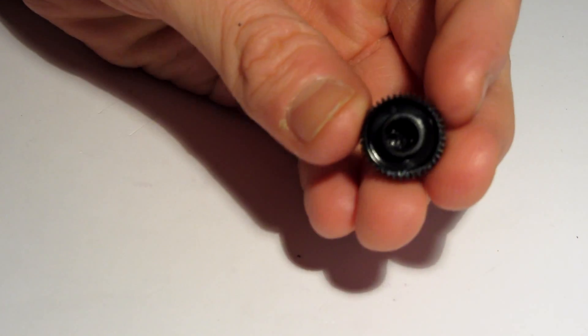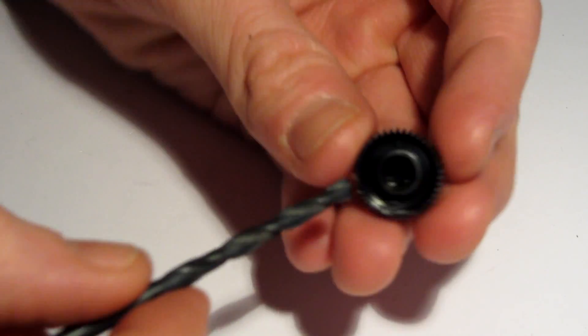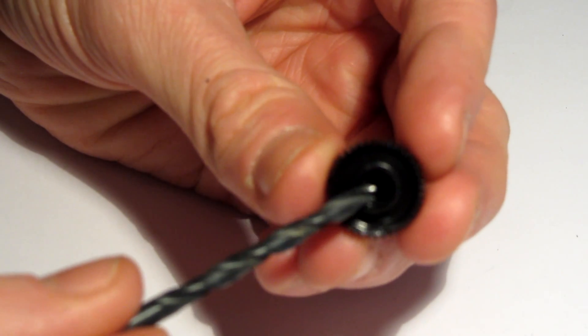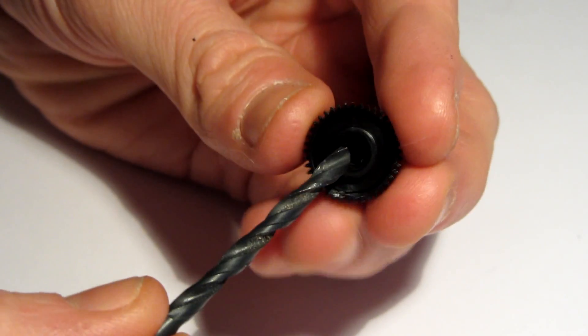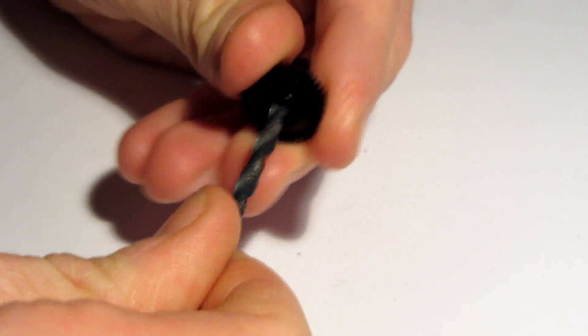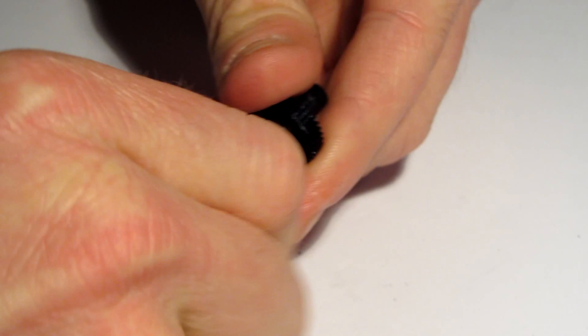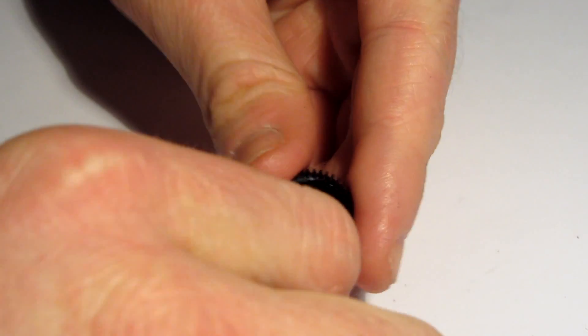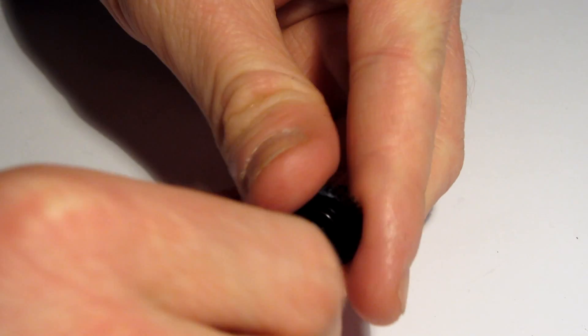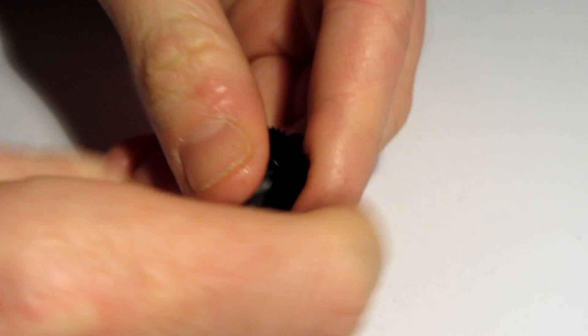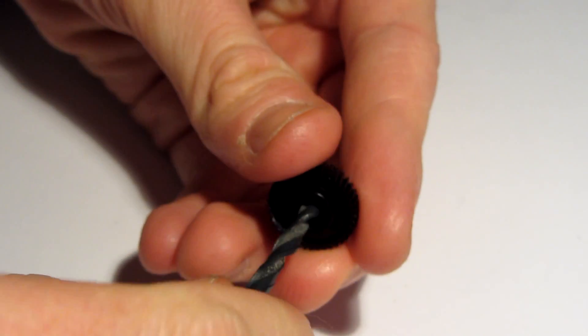The other thing we need to do is use a four millimeter drill bit to drill out the center to take out these little notches on the side. You don't use a drill itself, just use the drill bit by hand. It can be a bit difficult to get started at first. You need to remove those notches so the gear can spin freely.